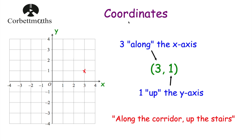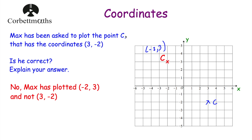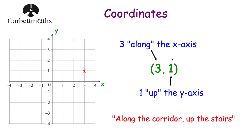In this video we've looked at coordinates: how to plot points if we're given the coordinates, such as (3, 1) which is 3 along the x-axis and 1 up the y-axis. We've looked at how to write down the coordinates of a point plotted on a grid. And we've looked at questions where we check if someone has plotted a point in the right place. Also have a look at other videos on coordinates, such as shapes on grids and finding midpoints. I really hope you found this video useful — please like and subscribe to the YouTube channel.